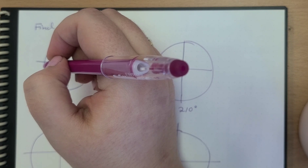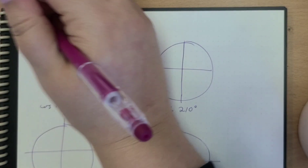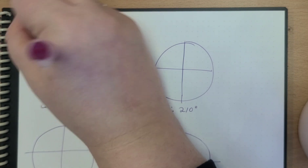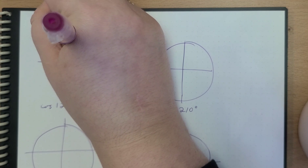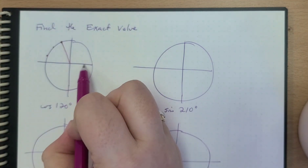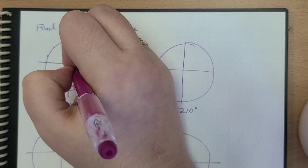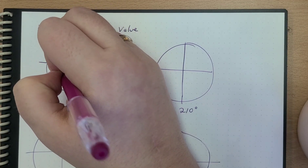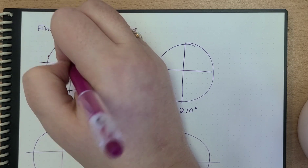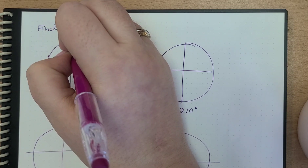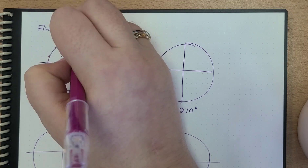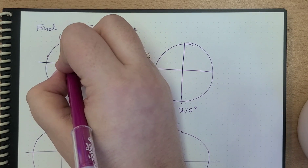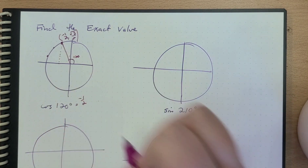So 120 is going to be right here. We know that this is 90 and then this is going to be another 30, so this is going to be 120. We can use that triangle — we know that this point here is going to be (−1/2, √3/2). So what's the cosine of 120? The cosine is just our x-value, so it's negative one half.